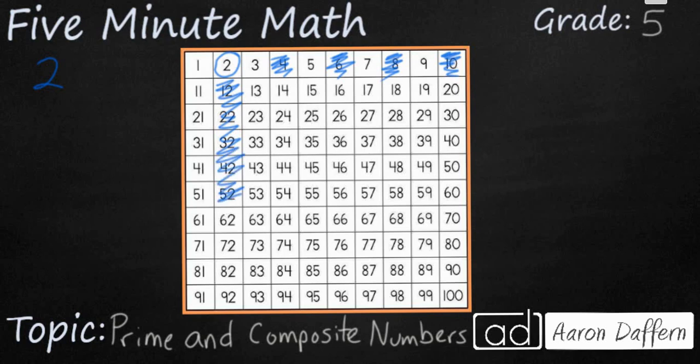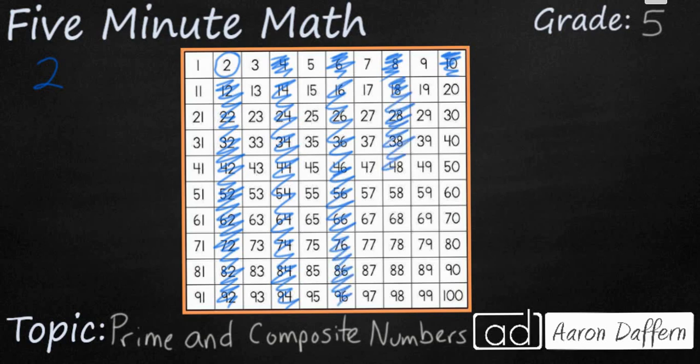So, two is an even number, and it's the only even number that's prime. But every other even number is going to be composite, because it could be divided by two. And a composite number, remember, is any number that has more than two factors. And so, once we get rid of all of our even numbers, it only leaves our odd numbers.